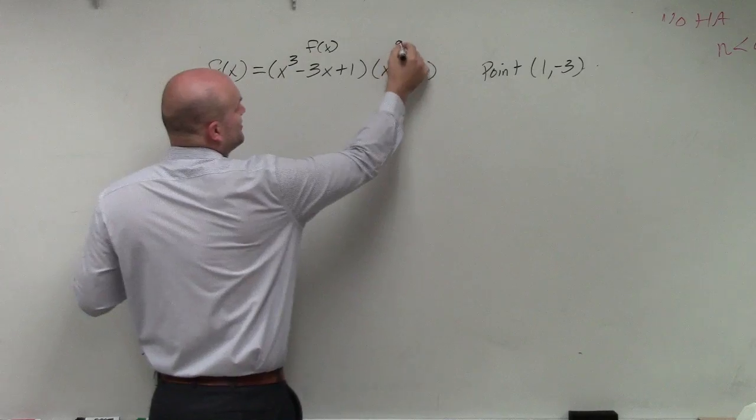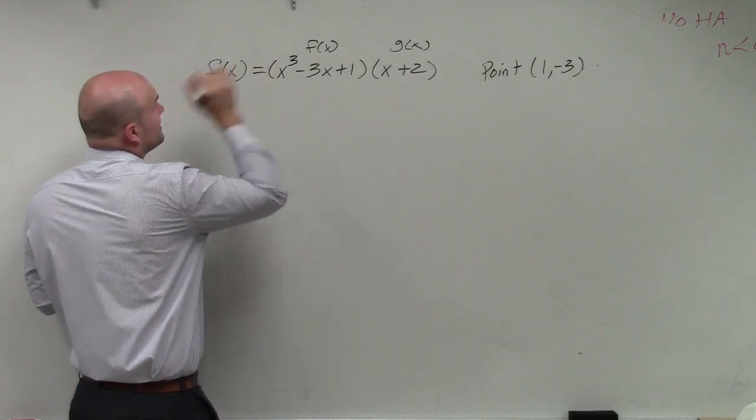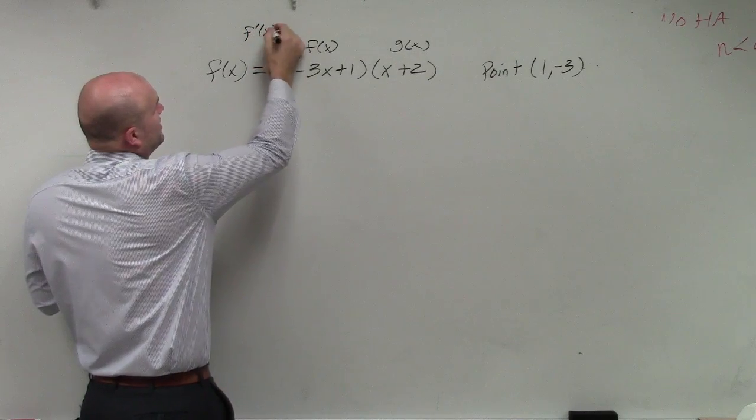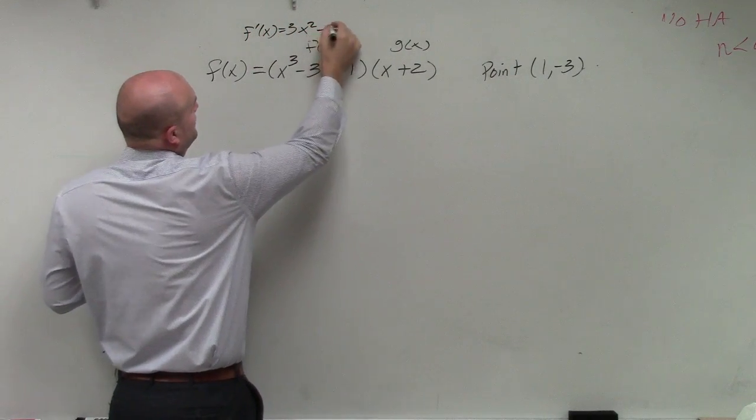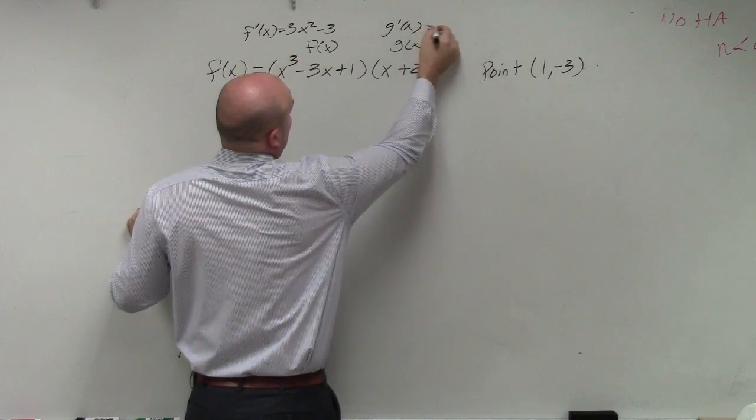If you remember, I'm just going to rewrite these as f of x and g of x. So therefore, I can say that f prime of x equals 3x squared minus 3, and g prime of x is equal to 1.